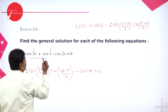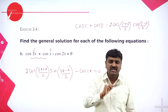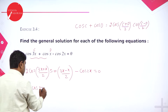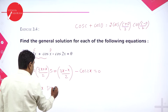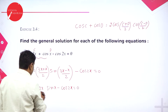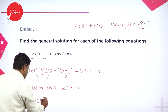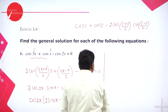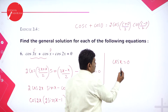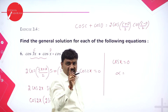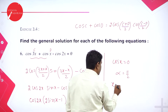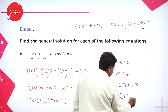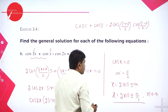Here c is 3x and d is x. Using cos c plus cos d equals 2 cos((c+d)/2) into cos((c-d)/2), the problem reduces to 2 cos 2x into cos x minus cos 2x equals 0. Now take cos 2x common from these two terms, and you're left with cos 2x times (2 cos x minus 1) equals 0. Now split this: one part is cos 2x equals 0, and the other is 2 sin x minus 1 equals 0.